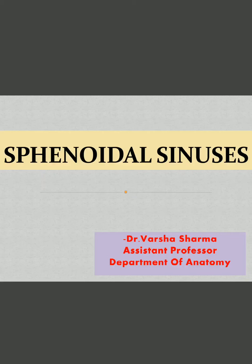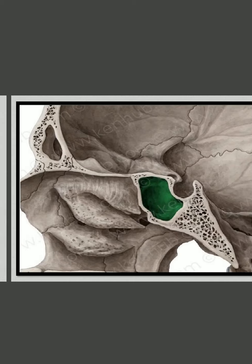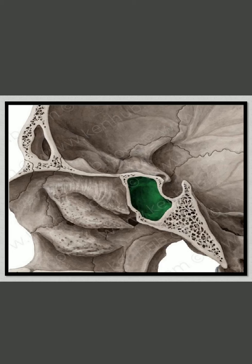Good morning students. Today we'll discuss the sphenoidal sinuses, that is the fourth type of paranasal sinus, in detail. The sphenoid sinus is located in the body of the sphenoid bone. As the name suggests, it is bilateral — one for the right side, another for the left side. They are separated by a septum and are unequal in size.